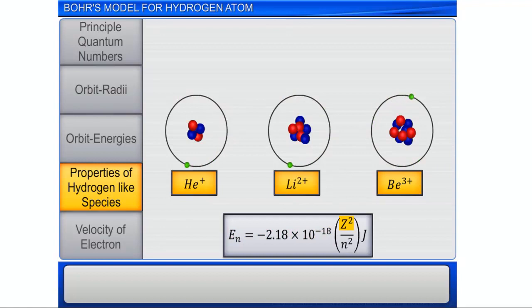The orbit radii of these ions is given by the expression Rn equal to Bohr's radius multiplied by the square of principal quantum number divided by the atomic number.